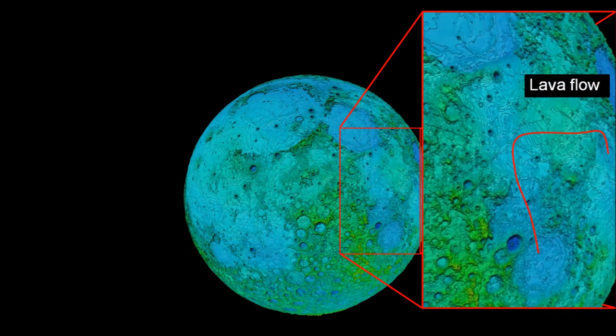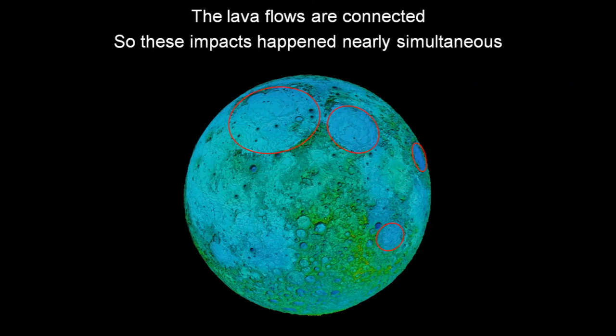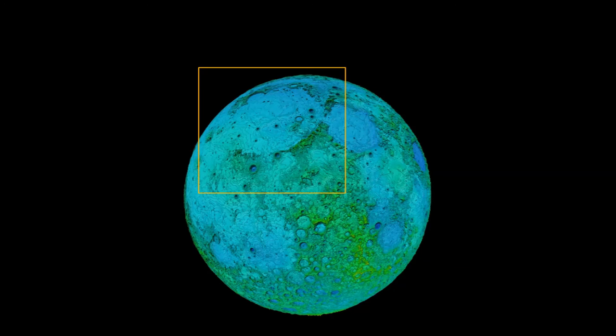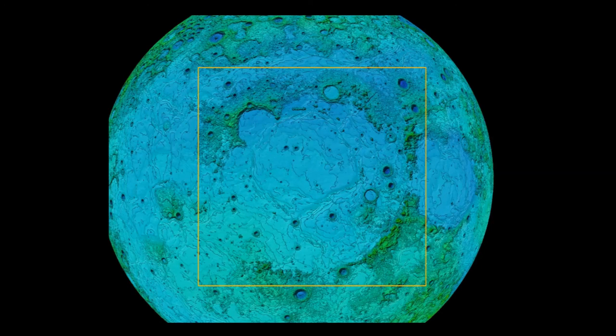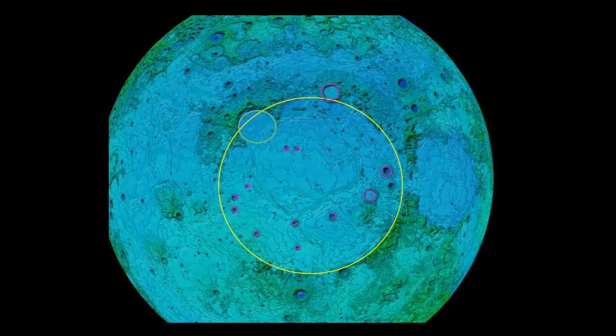Also two other impact basins seem connected with the lava flow. Since these lava flows are connected it seems they have happened nearly simultaneously. Let's take a closer look on Mare Imbrium. Here we see multiple craters. The large one which is marked yellow and smaller ones marked green and purple. What would the sequence of these craters be? The yellow one must have been first otherwise the other ones would have been wiped out.